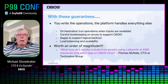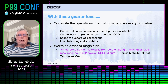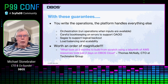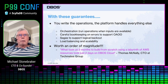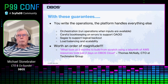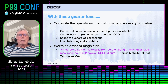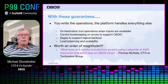So with these guarantees, you just write the forward logic, and the platform handles everything else. We handle orchestration to run your operations when inputs are available. We do careful bookkeeping on errors to support once and only once. We support sagas for logical back out. And we provide automatic load balancing and scalability. This is worth at least an order of magnitude in development time. An early DBOS customer is Thomas McNally, who's the CTO at TechMates Group. His quote: 'What took us two months to build in AWS took just two days on DBOS.' So this is where an order of magnitude in development time is saved — it's all on the error path and the oops logic.